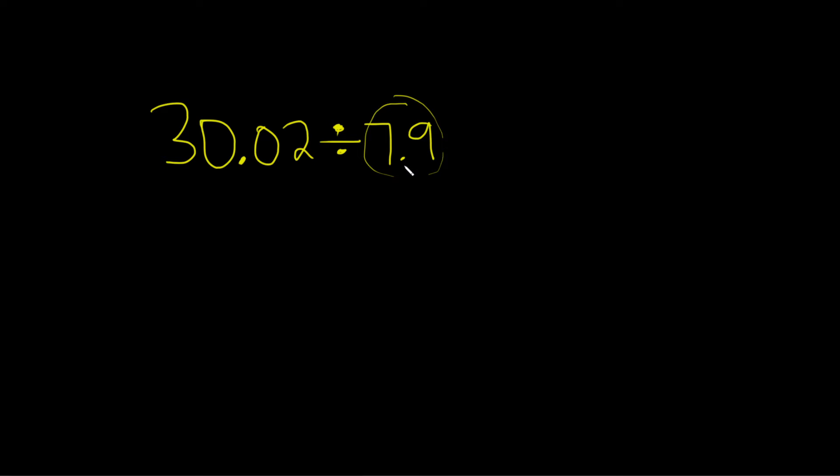So we'll start by doing that, by making it a whole number. To do that, we'll take this decimal and move it over to the right one time. So now we'll write this number, 79, right here on the outside. Because we moved it over one time, we have to move this one over one time also. So this will become 300.2.